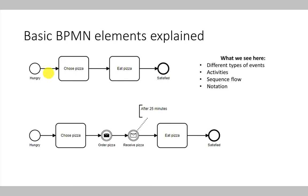Furthermore, there are events. Events show that something happened outside or inside the process. A start event, which is a simple circle, starts a process. A bold circle is an end event — it ends a process. Events represented by two circles are intermediate events, meaning something is happening during the process execution. For example, a pizza is ordered or a pizza is received — those could be events in a process.